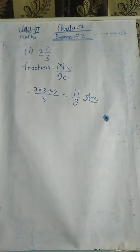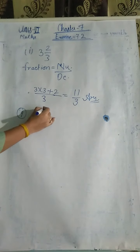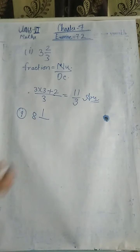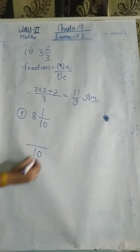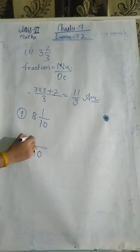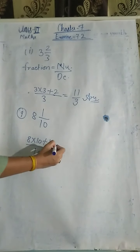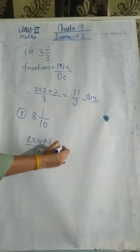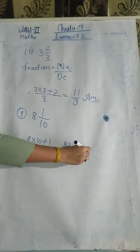Now question 2nd — question number 9 and 8 upon 10. The denominator is the same — 10. Then 8 into 10 plus 1: 80 plus 1 gives 81 upon 10. This is the answer.